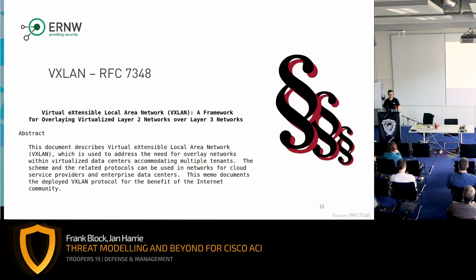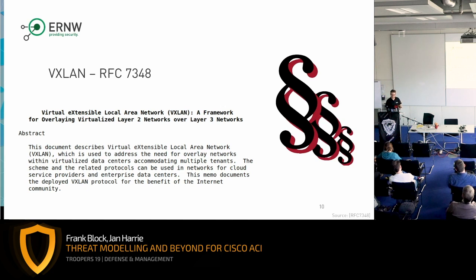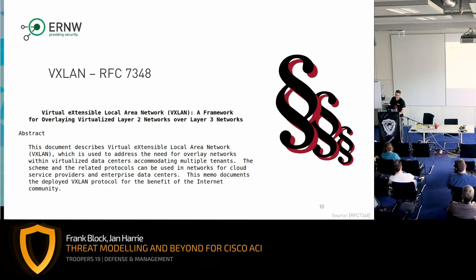At the back end, VXLAN is used to transport traffic from one leaf switch to another, providing an overlay on layer three so that layer two packets can be transported. Thanks to Henrik's talk from yesterday where he covered security details regarding VXLAN — that will also be an interesting topic to search into. Henrik already came to ERNW and we had some time to investigate.